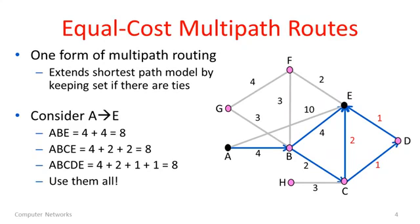So let's go through these questions in the context of equal cost multipath routing. This is really one form of multipath routing which is an extension of our shortest path model. All we do here is keep a set of next hops and routes if there are ties. Previously we just chose one randomly when the costs happened to be the same, when there was not a unique minimum cost.